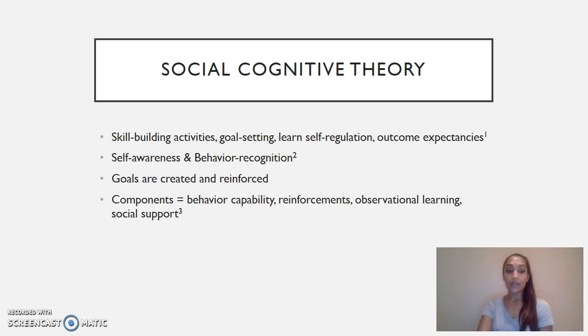The components of the social cognitive theory are behavioral capability, reinforcements, observational learning, and social support.